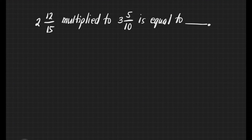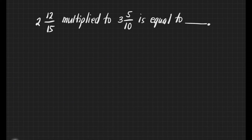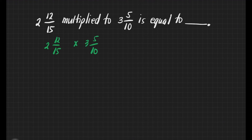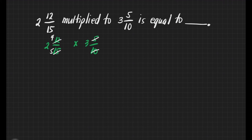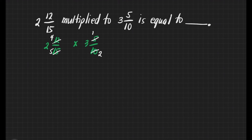We have another question here. 2 and 12 fifteens multiplied by 3 and 5 tenths is equal to blank. We will write first the fractions. Based on our given, I want to check if there is a fraction we can still reduce to lowest terms. Yes, we have 12 fifteens. What number can we divide both 12 and 15? That's 3. 12 divided by 3 is equal to 4, and 15 divided by 3 is equal to 5. How about 5 tenths? Yes, we can reduce it. 5 divided by 5 is equal to 1, and 10 divided by 5 is equal to 2. We can rewrite the fractions.